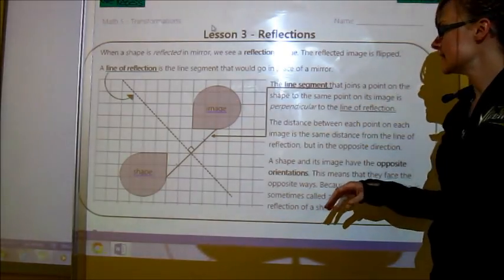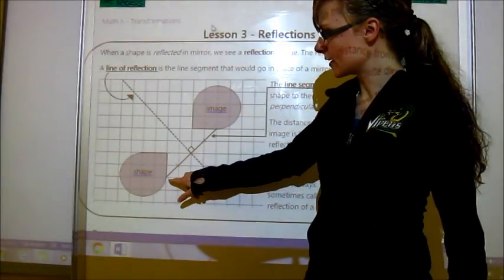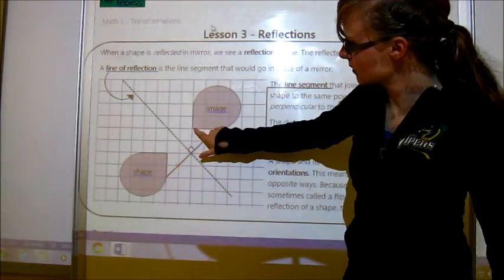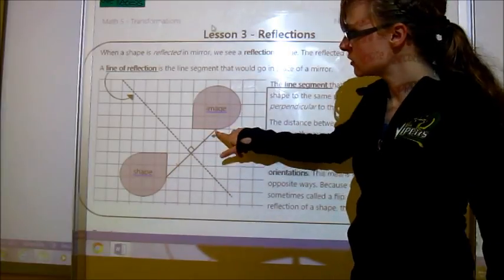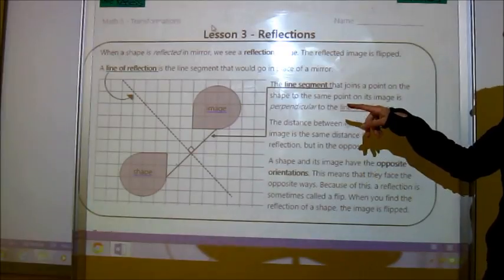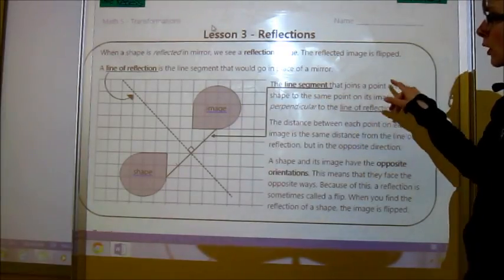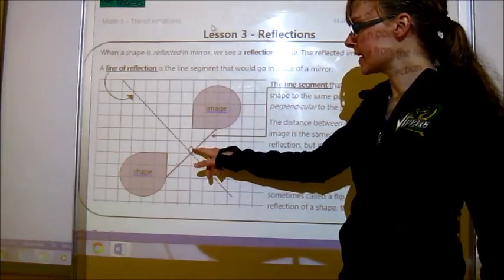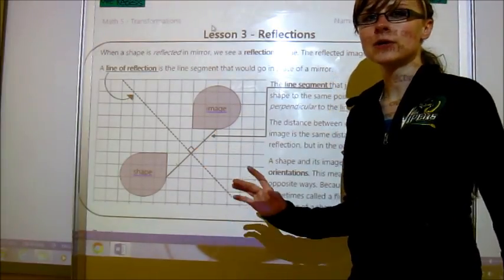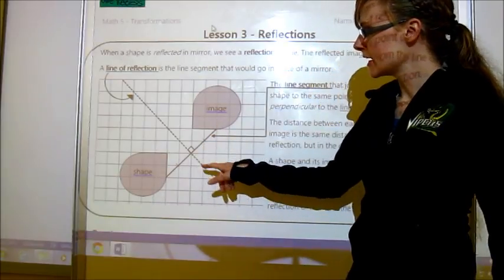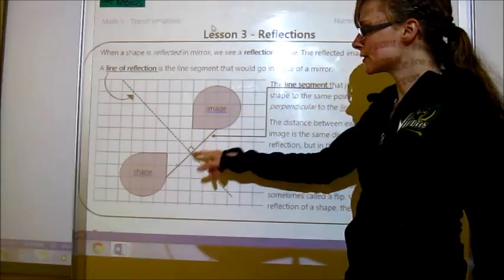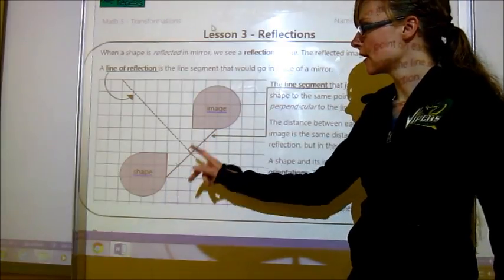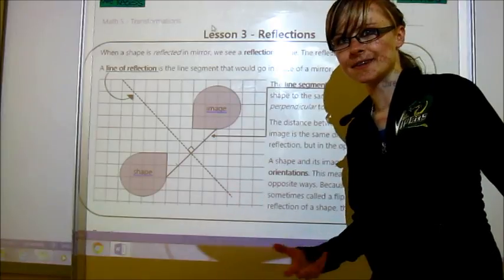And things that you need to know is that if you were to join equal points like the same points on an image, so like this is the same spot as this on the image. Notice how it's two squares in from the point and it's on this side. So if you connect those two points with a line segment, it is perpendicular to the line of reflection. So that means that you can draw a little box in here and it'll be a perfect angle right here. A right angle between here and here.